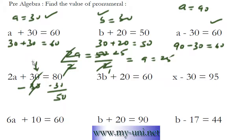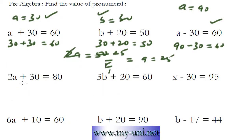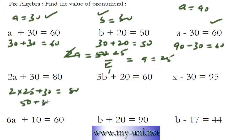And we can replace the value of A in this equation to find out if the answer is correct or not. So 2 times 25 plus 30 should be equal to 80. So the value of A here is 25.